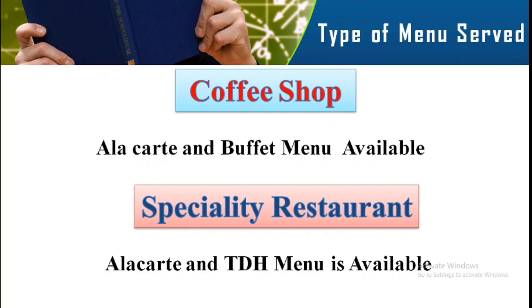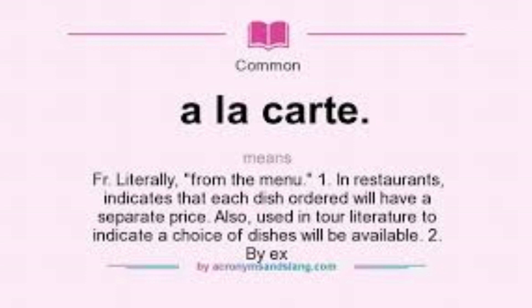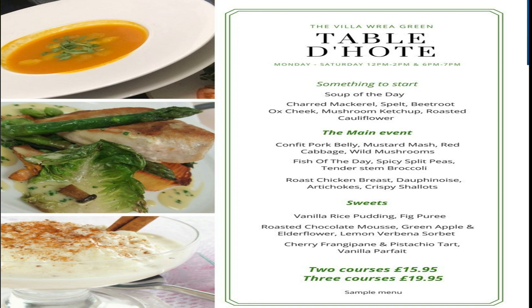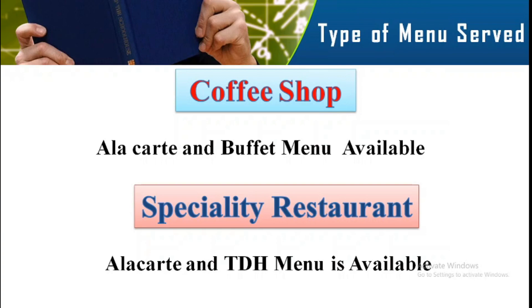For type of menu: in a coffee shop you have ala carte plus buffet. Ala carte means ordering from the menu — the physical menu handed to you when you sit down. In a specialty restaurant, you have ala carte plus table d'hôte (TDH), which is a set menu starting from soups, starters, main course, and desserts. Buffet is not served in a specialty restaurant, so table d'hôte is used instead.